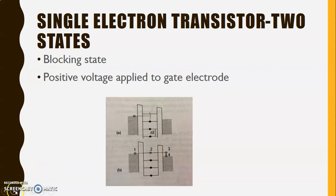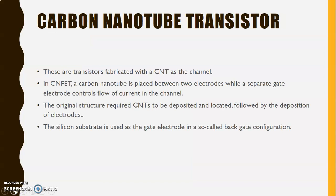The next topic for discussion is the carbon nanotube transistor. These are transistors fabricated with a carbon nanotube as the channel. In CN-FET, a carbon nanotube is placed between two electrodes while a separate gate electrode controls the flow of current in the channel.